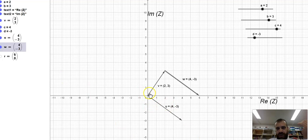And now what we have is two plus three i plus four minus three i equals six. So we have a complex number plus a complex number.